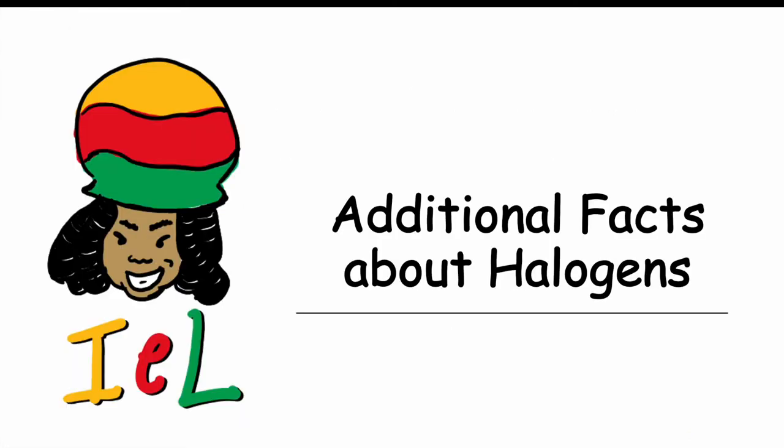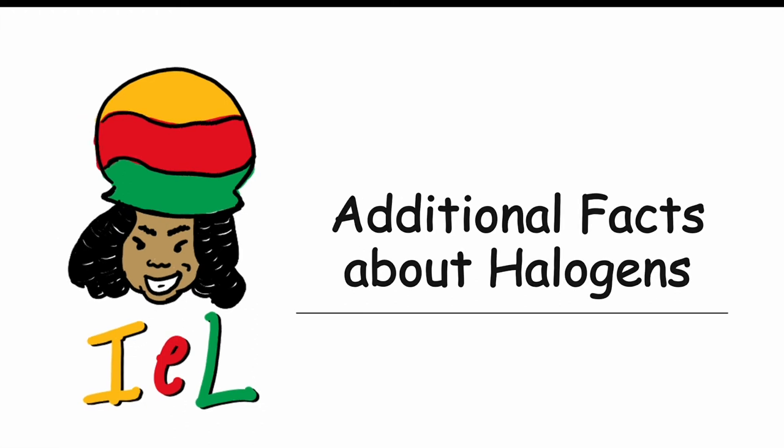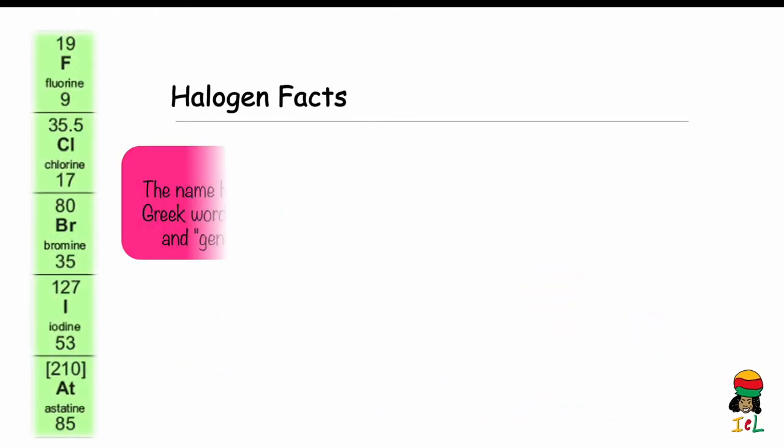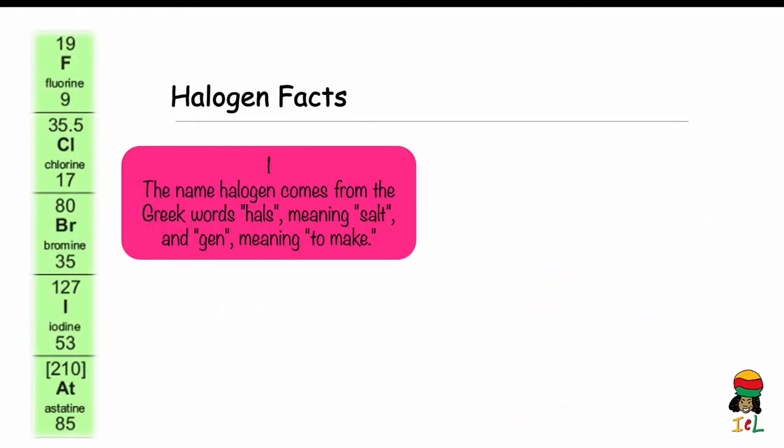We will end the lesson with additional facts about halogens. Fact 1: The name halogen comes from the Greek word "halos", meaning salt, and "gen", meaning to make. Therefore, the term halogen means to make salt.